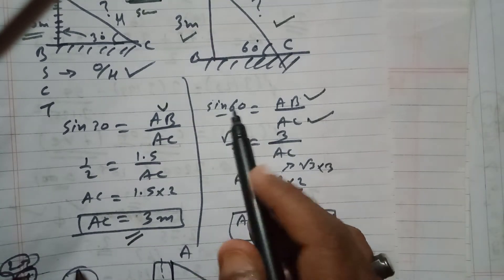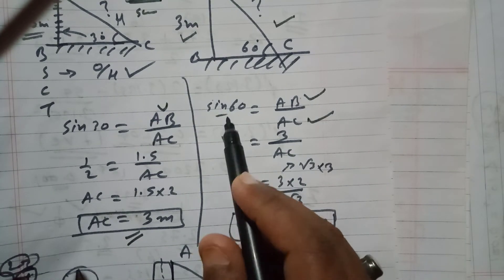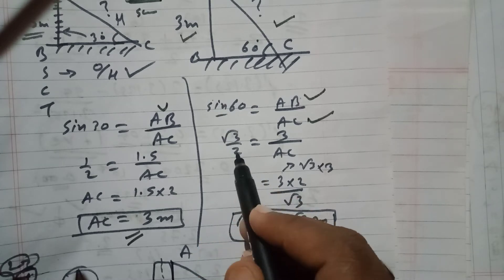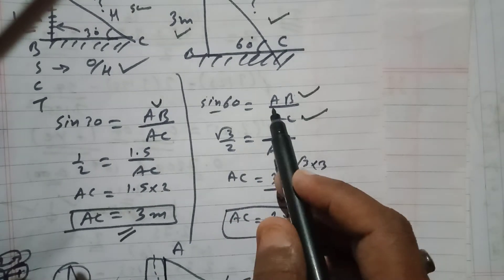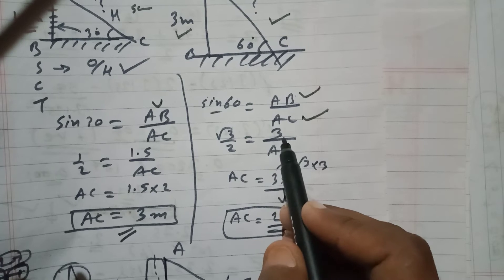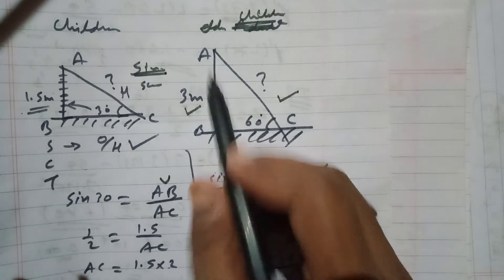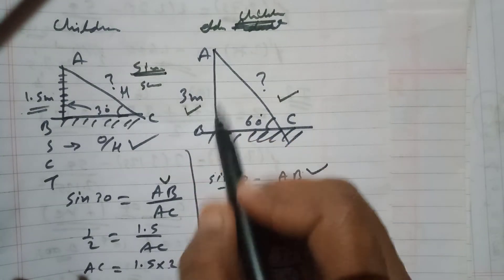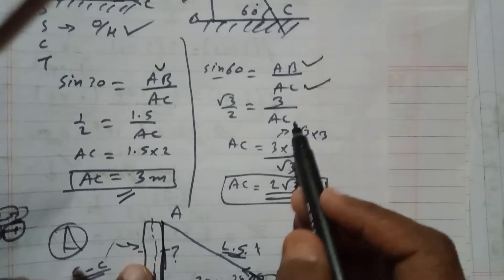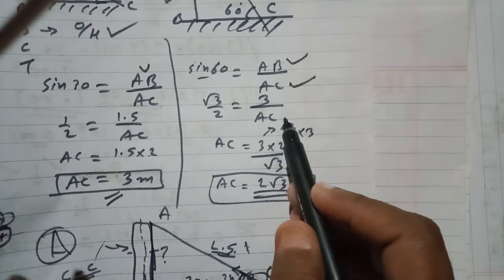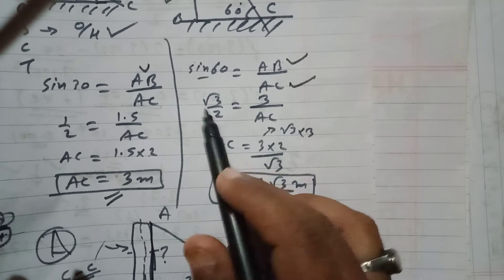Sine 60 is root 3 by 2. You need to remember these values. AB is given as 3 meters. This is your triangle - AB is 3 meters and AC we need to find out. I will rearrange them. I will transfer this AC over here and root 3 over here.